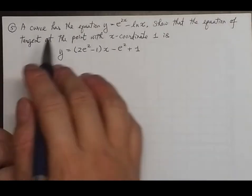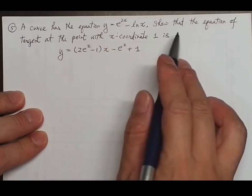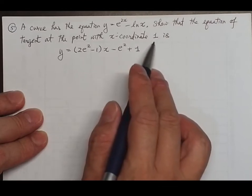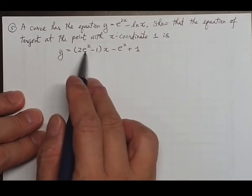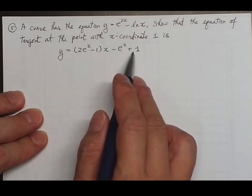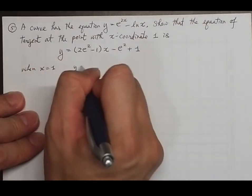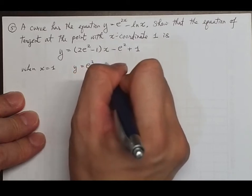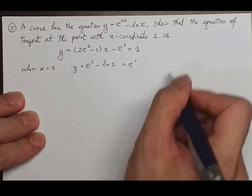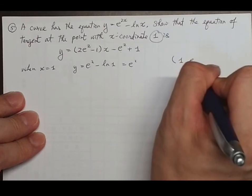Question 5: a curve has the equation y equals e to the 2x minus log x. Find the equation of the tangent at the point with x-coordinate equal to 1. When x equals 1, y equals e to the 2 minus log 1 equals e to the 2. So the coordinate is (1, e²).